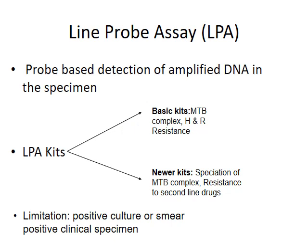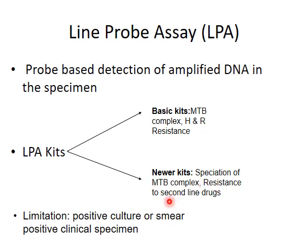The other test available is Line Probe Assay (LPA). As the name suggests, it is a probe-based detection of amplified DNA in the specimen. LPA kits are either basic kits or newer kits. In the basic kits, detection of MTB complex can be done along with detection of resistance to isoniazid and rifampicin. In the newer kits, species identification of MTB complex can be done and resistance to second-line drugs can be detected. One limitation is that LPA can only be done on positive culture or smear-positive clinical specimens.